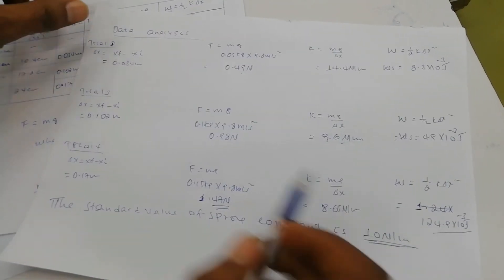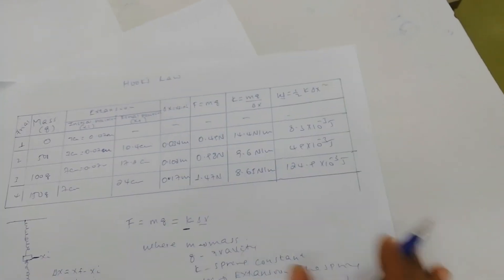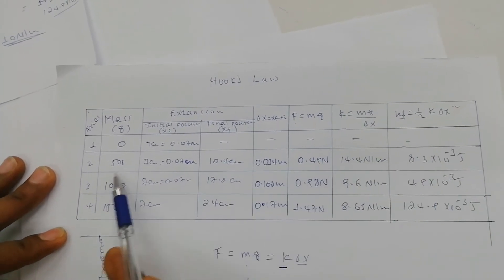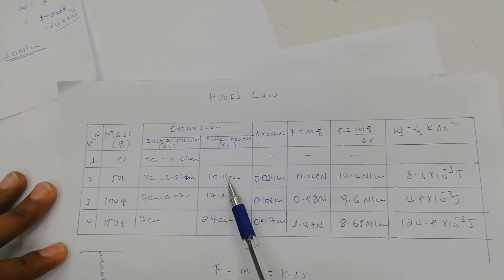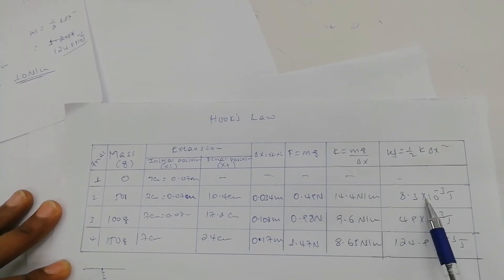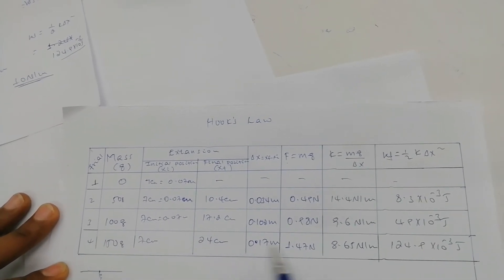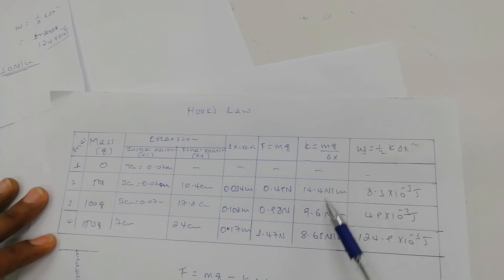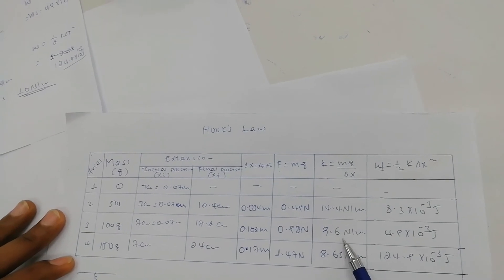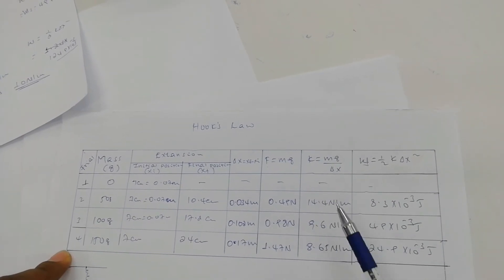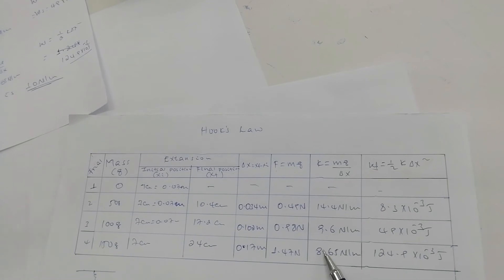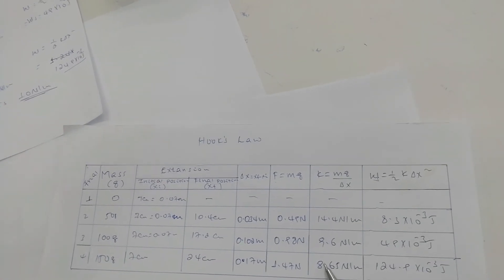Taking the values in the data table: in the first trial, no masses were added. In the second trial, we have the final position, the amount of extension, the force, the spring constant, and the work done on the spring. We have done three trials, giving us three different values for the spring constant: 40.4, 9.6, and 8.65 newtons per meter. The standard value of the spring constant is 10 newtons per meter.